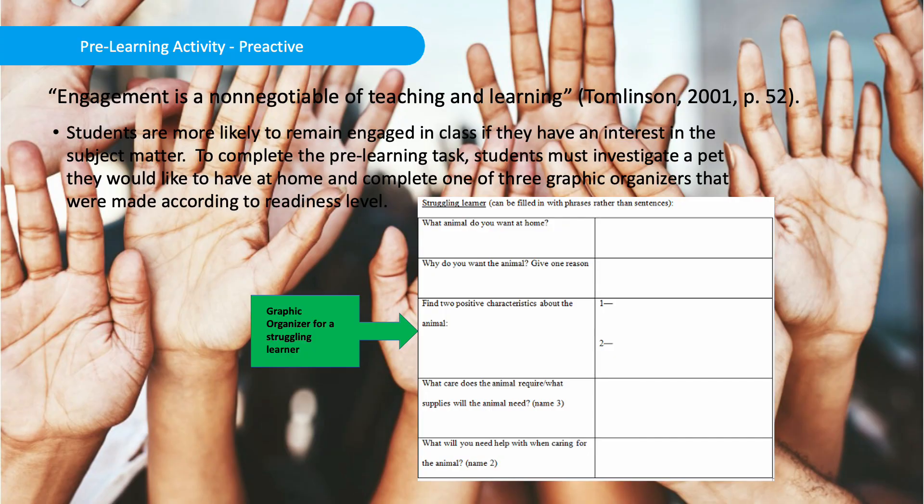The pre-learning activity, also known as pre-active engagement, is a non-negotiable of teaching and learning. Students are more likely to remain engaged in class if they have an interest in the subject matter. To complete the pre-learning task, students must investigate a pet they would like to have at home and complete one of three graphic organizers that were made according to readiness level.